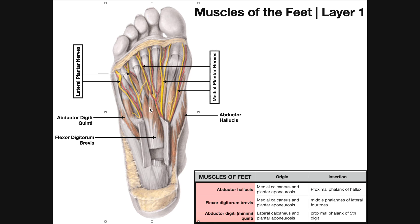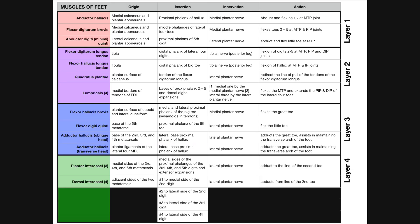The third muscle in this layer is flexor digitorum brevis. Notice its muscular part is completely within the foot, which differs from flexor digitorum longus — that muscle's belly is completely within the sura of the leg, deep to the gastrocnemius-soleus complex. Flexor digitorum brevis originates on the medial part of the calcaneus and partly the plantar aponeurosis. It inserts on the middle phalanges of the lateral four toes — digits two through five — and flexes those digits at both the metatarsophalangeal joint and the proximal interphalangeal joint.